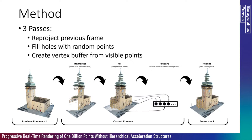In the first pass, we reproject the data that's already been previously rendered, because this data from the previous frame is very likely to be visible again in the current frame due to slight transformation changes. After reprojection, there's some disocclusion — data that wasn't visible previously becomes visible. In the second pass, the fill pass, we fill this missing data by rendering a random selection of points. In the final prepare pass, we take all the points now visible at the end of the frame and store them into a vertex buffer, which will be rendered again in the first pass of the next frame. Repeating this, the method eventually progresses towards the full result.